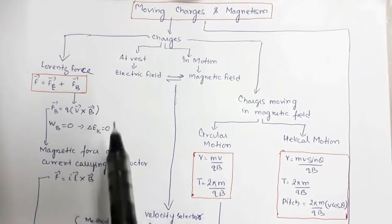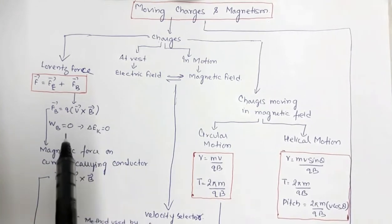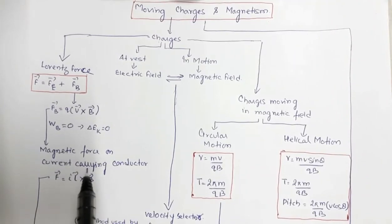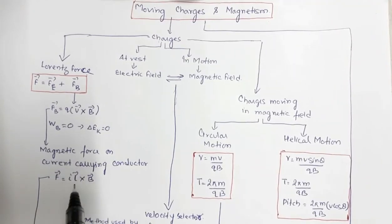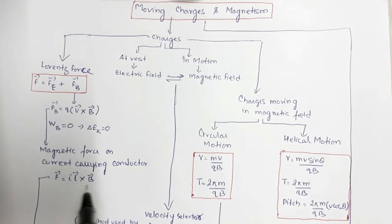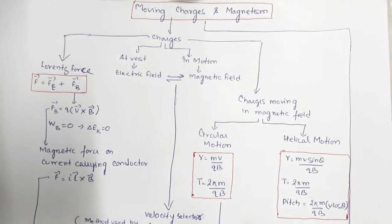From the force on a charged particle, we can obtain the expression for the magnetic force on a current-carrying conductor, which is F = IL × B. This expression tells us how the force depends on the orientation of the magnetic field.